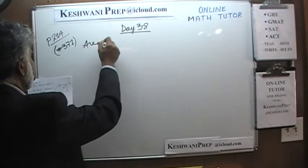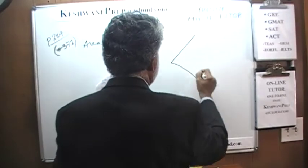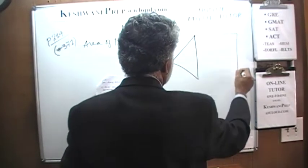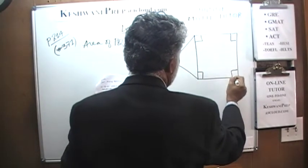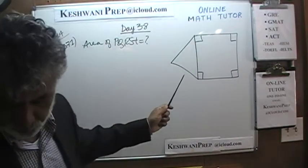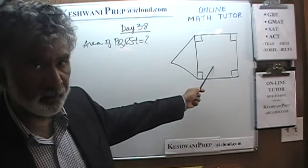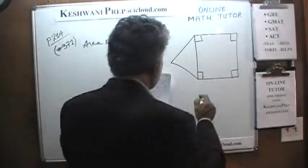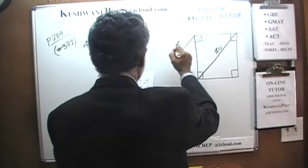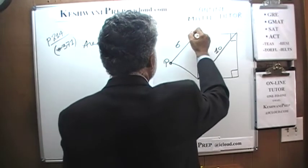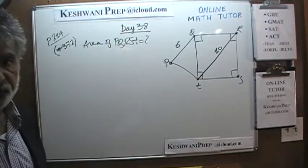Another geometry question. The question is: what is the area of P, Q, R, S, and T? It looks something like this — we have a triangle here, and then a shape below it. We are told all the interior angles are 90 degrees. The fact that every single one of these angles is 90 degrees tells us that this is either a square or a rectangle. They further tell us that one distance is 10 and this distance is 6, and the vertices are P, Q, R, S, and T. Our job is to figure out the area.